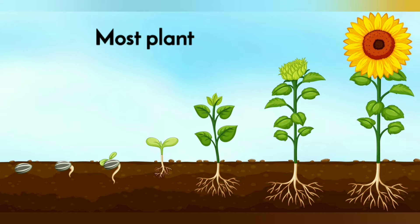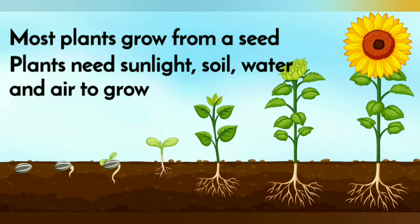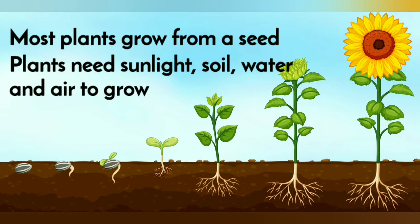Most plants grow from a seed. Plants need sunlight, soil, water and air to grow. Plants cannot move, they make their own food using air, water and sunlight.